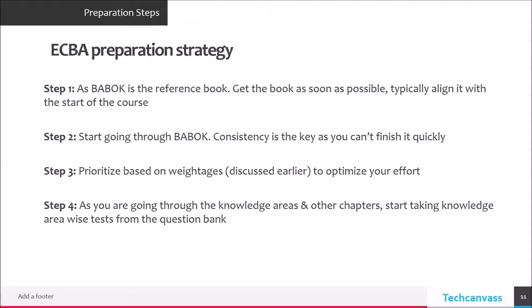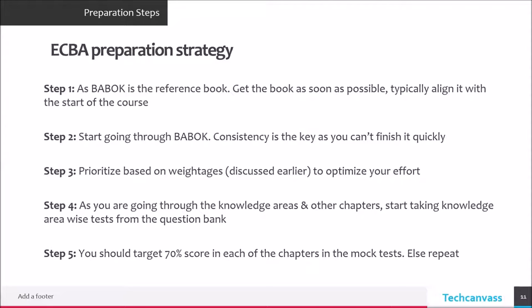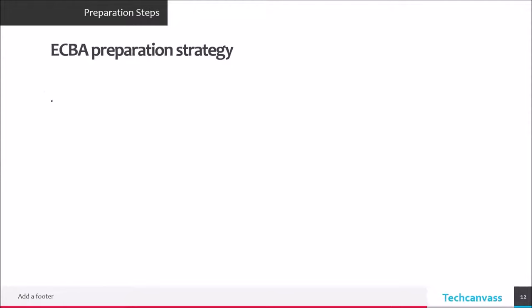As you go through each chapter, you can start taking chapter-wise tests. Our question bank has chapter-wise tests, so start going through those on a regular basis as you cover the chapters. Your target should be 70% in each chapter. If you start getting 70% score regularly, that means you should feel confident about that chapter's understanding and can move on to the next step.